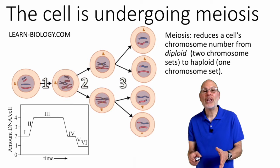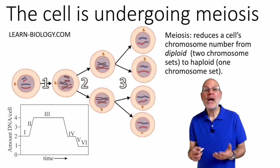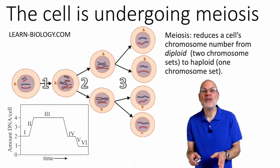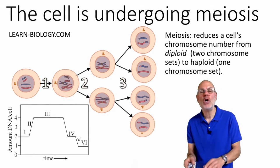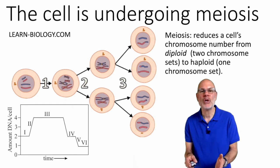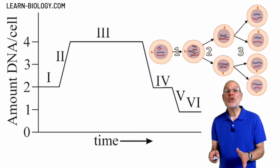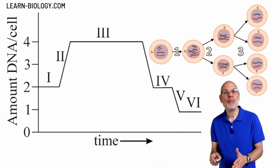The diagram you were looking at was about a cell that's undergoing meiosis. Meiosis is cell division that reduces a cell's chromosome number from diploid, with two chromosome sets, to haploid, with one chromosome set. Here's the connection between the opening diagram and what happens during meiosis.